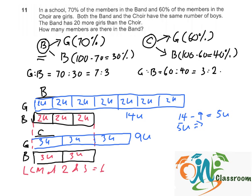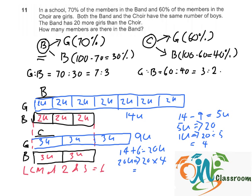So 5 units equals 20. To find how many members are in the band, we find 1 unit: 20 divided by 5 equals 4. In the band altogether, there are 14 units plus 6 units equals 20 units. So 20 units times 4 equals 80 members in the band.